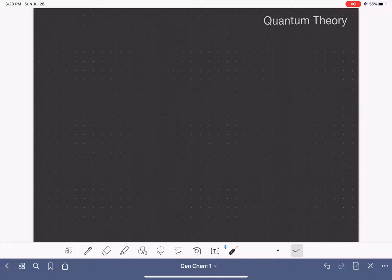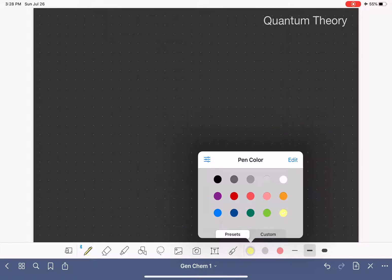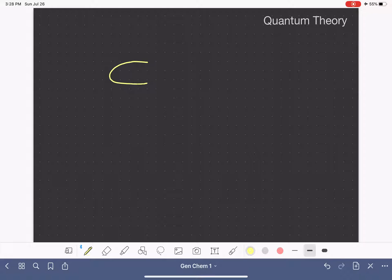This video is going to be a very basic introduction to quantum theory. Quantum theory pertains to the way in which energy is transferred between two objects. I want to remind you before we get into this video that when chemists use the word energy, we are also referring to light or electromagnetic radiation. So energy, light, and electromagnetic radiation all mean the same thing to a chemist.